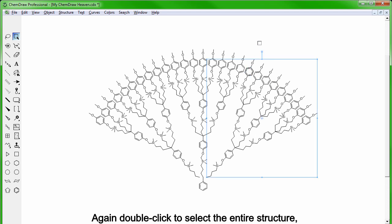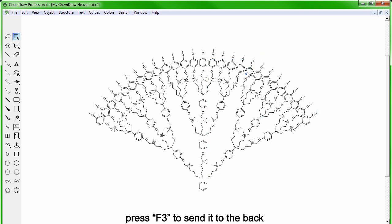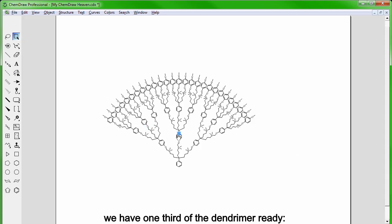Again, double click to select the entire structure, F3 to send it to the back and double click on the anchor benzene ring that is left to the front and delete it. Finally, stitch the rest of the molecule and now we're almost finished since we have one third of the dendromer ready.